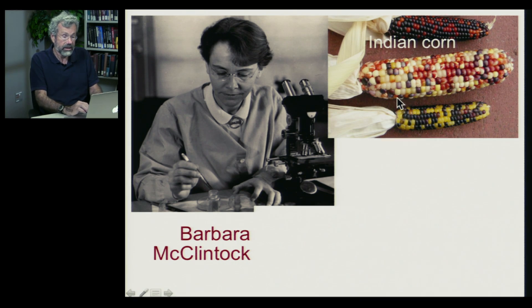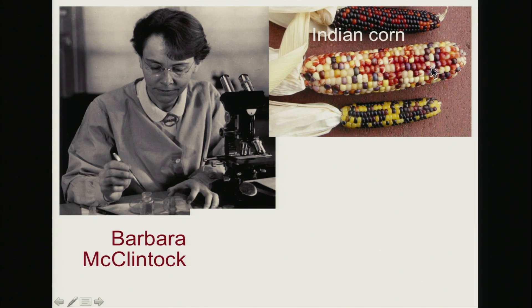She discovered these through her studies of Indian corn. The characteristic feature of Indian corn is that the different kernels are different colors, because each kernel has a different genotype reflecting that of the fertilized seed. In some, pigments are operating to produce darker colors, and in others, that pigment has been turned off.